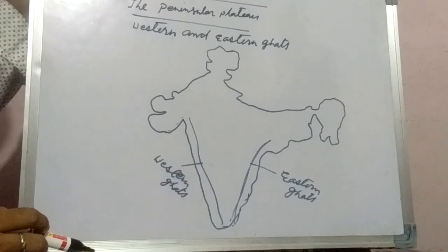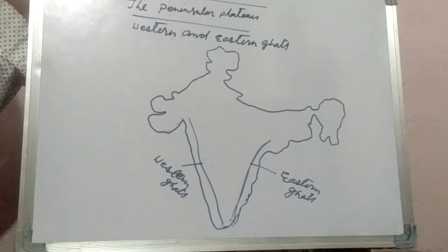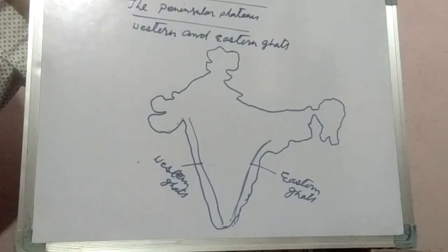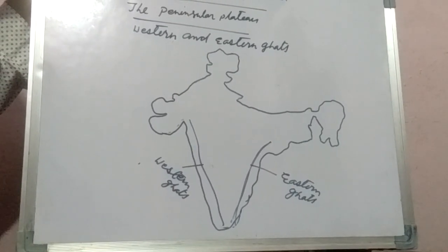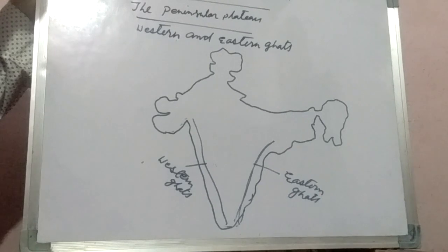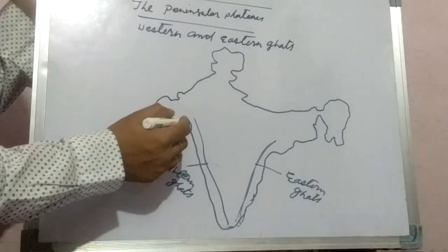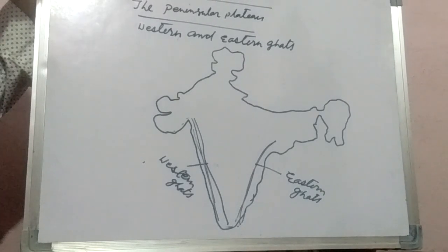Our next topic is the Western and Eastern Ghats of the Peninsular Plateau. The Western Ghats and Eastern Ghats mark the western and eastern edges of the Deccan Plateau respectively. The Western Ghats are continuous and can only be crossed through passes. They are a very continuous form of Ghats, and to pass through them you must use mountain passes.